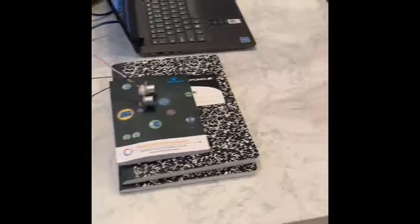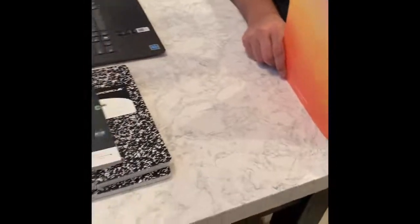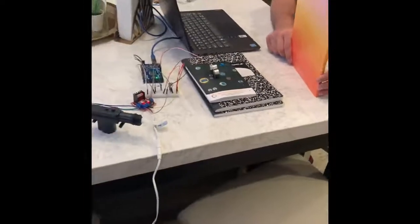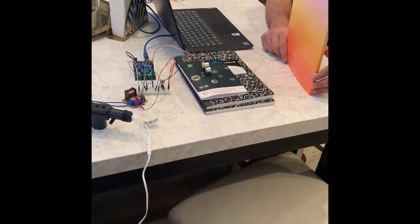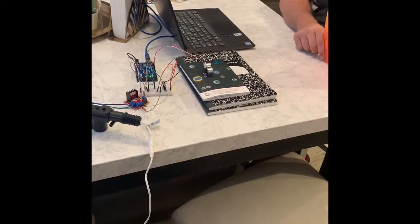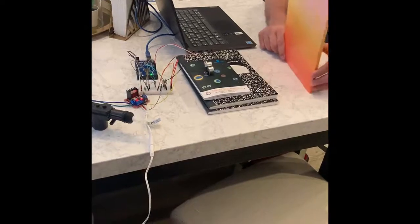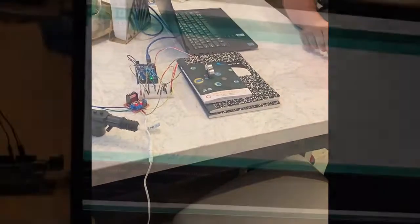This is a demonstration of the ultrasonic sensor. Our parameters are set to 10 centimeters for demonstration purposes. When it's less than 10 centimeters it unlocks, simulating arriving home. When it's more it locks. The following will show our code.